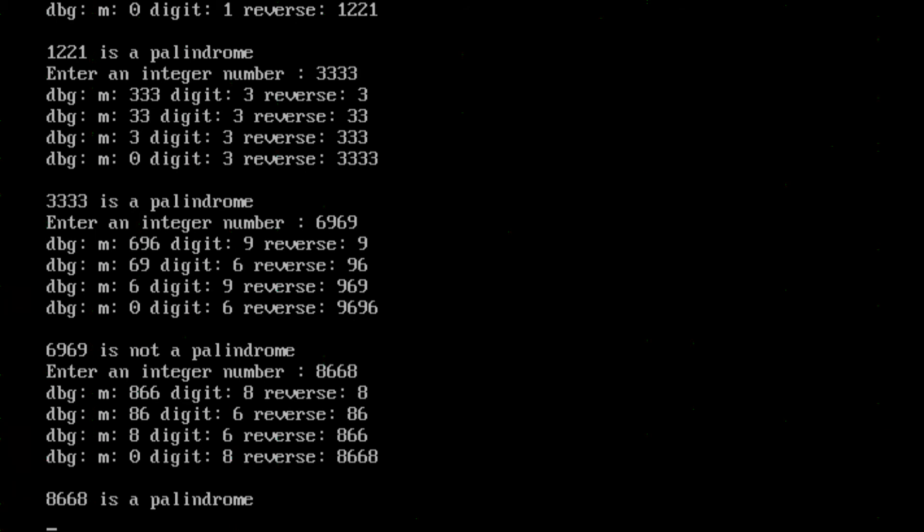And the last one is 8668. So 8668 as I see the m value what we read kept on dividing by 10. So it became 4 digit to 2 digit to single digit and 0 and reverse kept on accumulating from single digit to 4 digit. And 8668 is a palindrome.